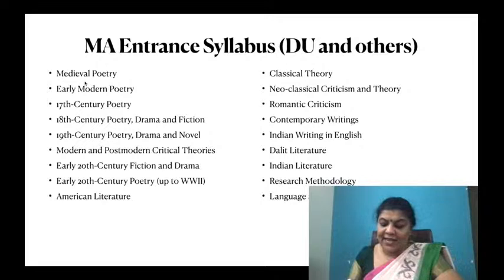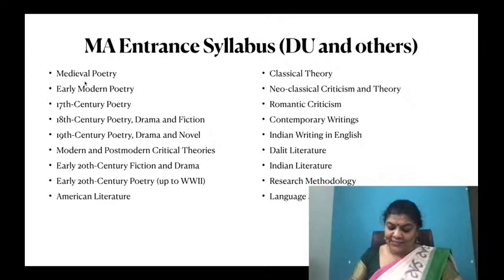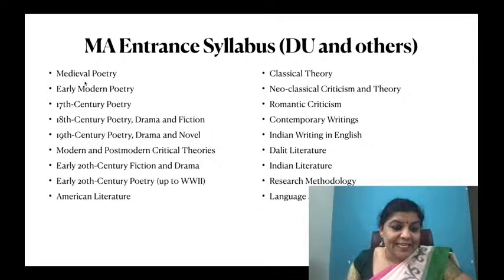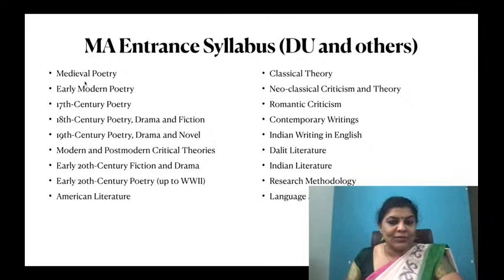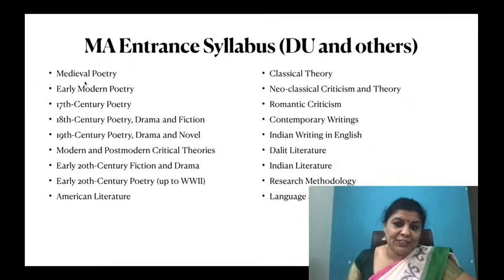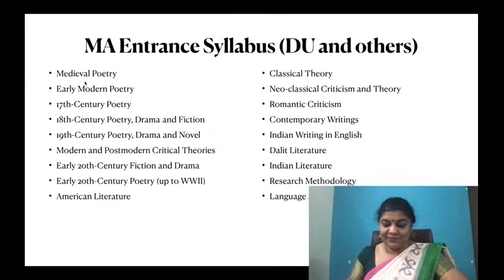Who wrote 'Love That Doth Reign'? It is by Surrey. Which pastoral poem was published in 1579 and dedicated to Philip Sydney? It is The Shepherd's Calendar, published in 1579 and dedicated to Philip Sydney. Who wrote Observations in the Art of English Poesy? It is an Elizabethan critical work by Thomas Campion.